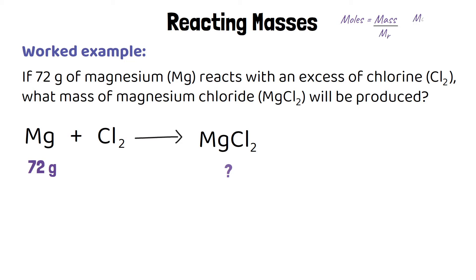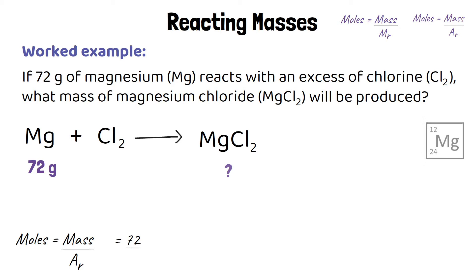To do that we need to work out the number of moles of magnesium. We use the equation: moles equals mass over relative formula mass, or moles equals mass over atomic mass if it's just an element. We want to work out the number of moles of magnesium so we can work out how many moles of magnesium chloride we're going to make. The mass is 72 grams and the atomic mass of magnesium from the periodic table is 24, so 72 divided by 24 gives us 3 moles of magnesium.